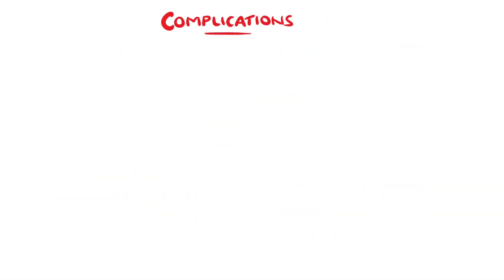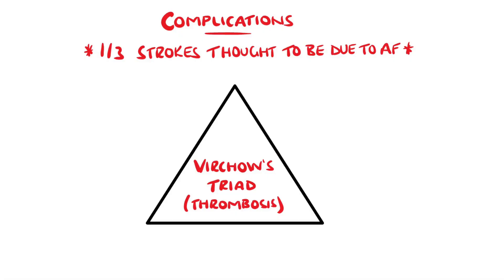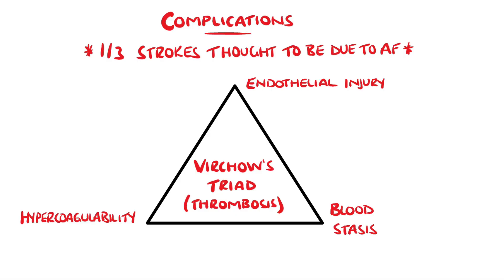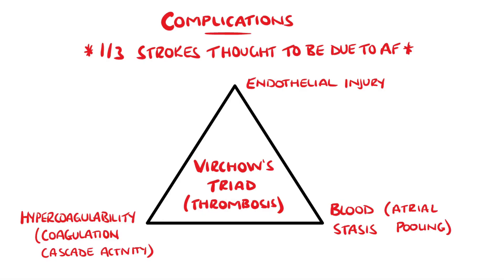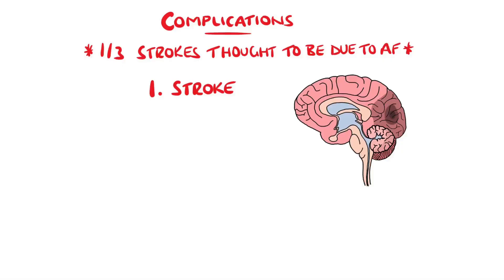Having atrial fibrillation increases the chances of significant other pathologies. It is thought that one in three strokes are caused by atrial fibrillation. If we look at Virchow's triad of thrombosis, there is hypercoagulability, endothelial injury, and blood stasis. If the atria are fibrillating, blood within them is much more static, which means a higher risk of clot formation. Atrial fibrillation also features activation of the coagulation cascade and there is typically fibrosis as well as endothelial dysfunction, overall giving a high risk of thrombus formation. These clots could then be pumped by the heart into the brain, causing an ischemic stroke.